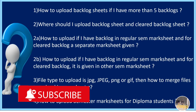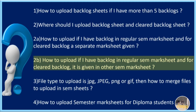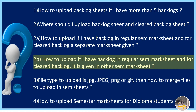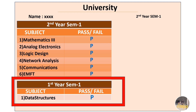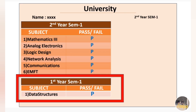Now for the second sub-question: how to upload if the backlog is in the regular SEM mark sheet but the cleared backlog is included in another SEM mark sheet rather than a separate sheet? Suppose in your second year, first SEM mark sheet, they have included the first year SEM subject — Data Structures — which you had as a backlog and have now passed. So there is no separate sheet; it is mentioned in the 2-1 mark sheet.